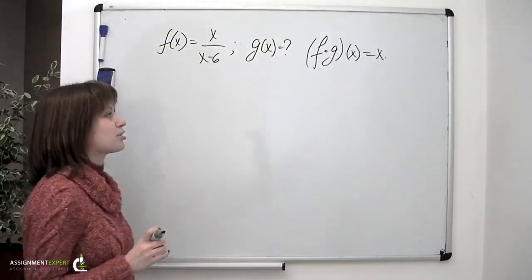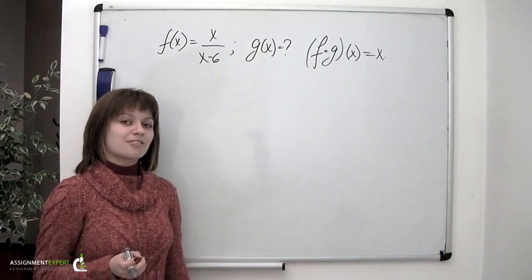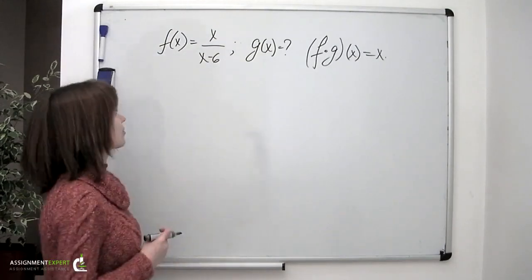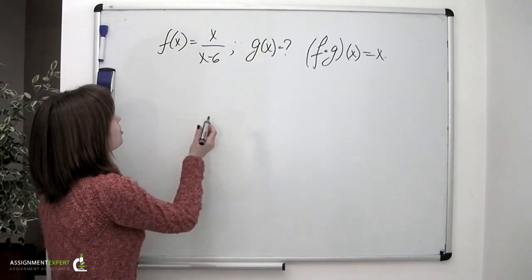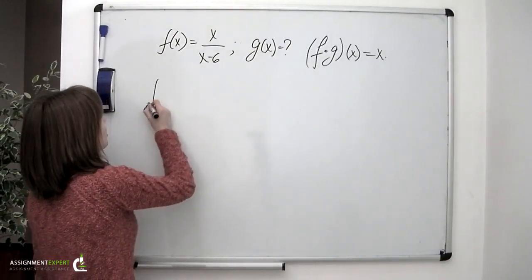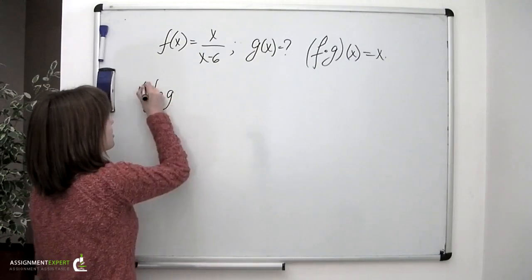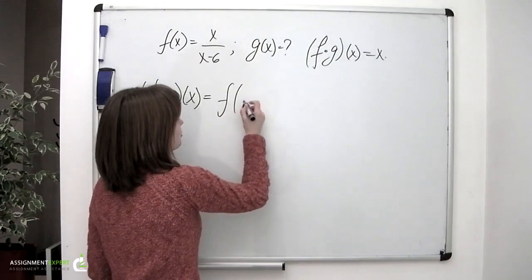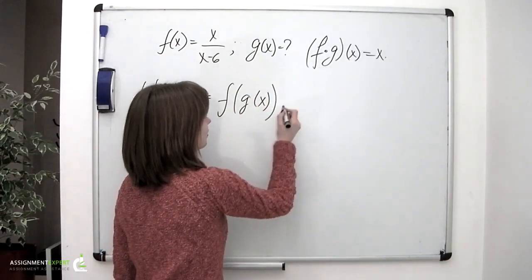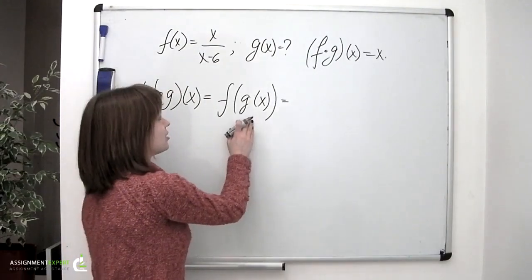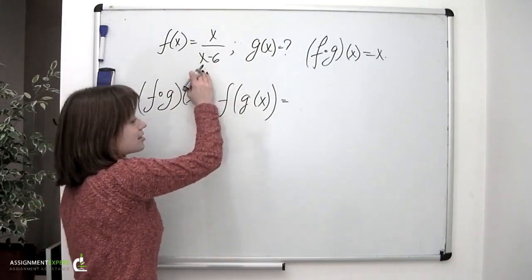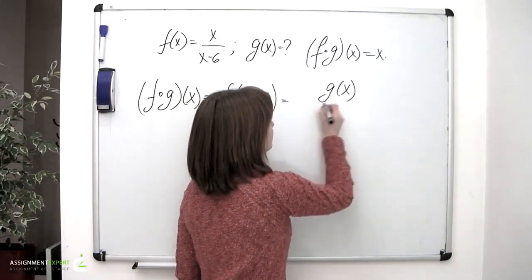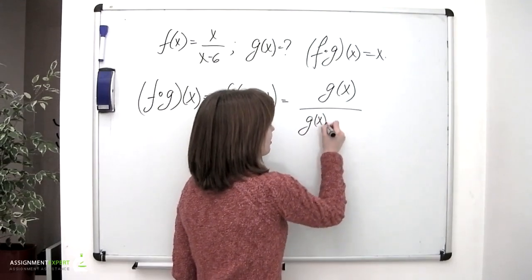In this task, we are dealing with the composition of functions. Recall the definition: function composition is the application of one function to the result of another. To obtain the composition f of g of x, we substitute g(x) into f(x) in place of each x, giving us g(x) over g(x) minus 6.